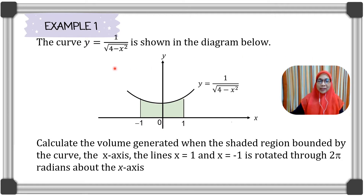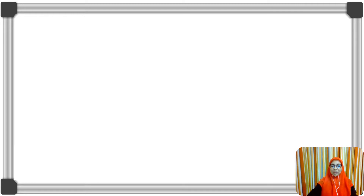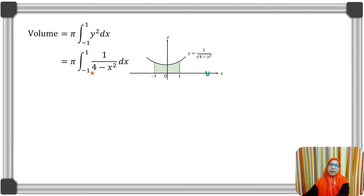We are given the curve y = 1 over the square root of (4 minus x squared). We are required to find the volume generated when the shaded region is rotated π radians about the x-axis. Since the shaded region is rotated about the x-axis, the volume V is given as π times the integral of y squared with respect to x from x = -1 to x = 1. We can factorize 1 over (4 minus x squared) using partial fractions.